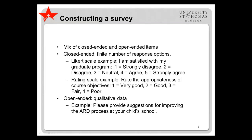Closed-ended items have a finite number of response options. For example, Likert scale items require participants to indicate whether they strongly agree, agree, are neutral, disagree, or strongly disagree with a statement, such as, 'I am satisfied with my graduate program.' Another example of a closed-ended item is a rating scale item, where participants may be asked to rate the appropriateness of course objectives on a four-point scale, where one is very good, two is good, three is fair, and four is poor. In contrast, open-ended items produce qualitative rather than numeric data. For example, participants might be asked to provide suggestions for improving the ARG process at their child's school.